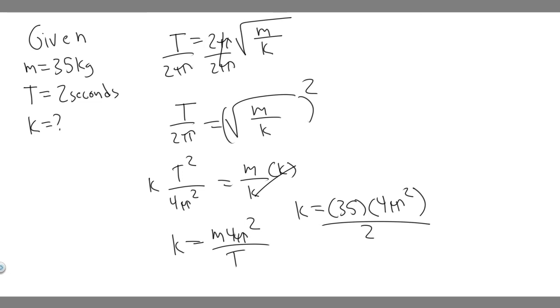So you're just going to go ahead and do this. 35 times 4π squared. This is actually t squared, sorry. It's m times 4π squared over t squared, and then divide by t squared, which is just 2 squared, so this is just 4. Sorry about that mistake, I caught it though.